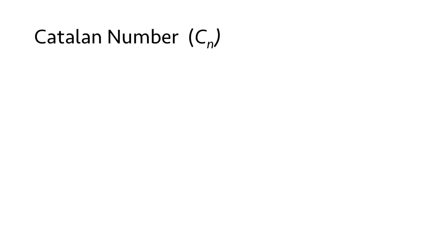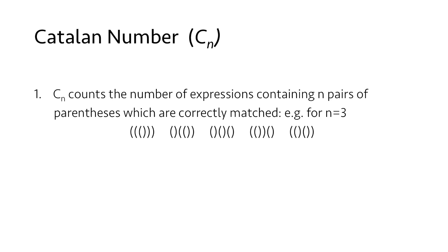Let's look at some of the uses of Catalan number. Catalan number can be used to count the number of expressions containing n pairs of parentheses which are correctly matched. For n equal to 3, for 3 pairs these are the following arrangements that can be made in which the parentheses are correctly matched.